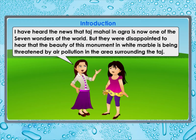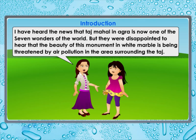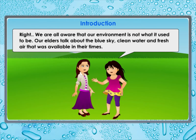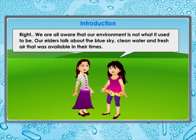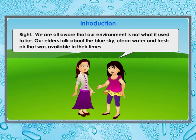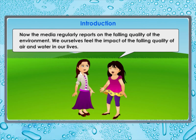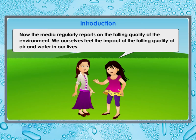The beauty of the Taj Mahal in Agra, one of the seven wonders of the world, is being threatened by air pollution in the surrounding area. We are all aware that our environment is not what it used to be. Our elders talk about the blue sky, clean water, and fresh air that was available in their times. Now the media regularly reports on the falling quality of the environment.